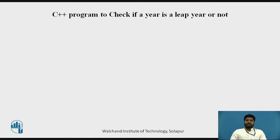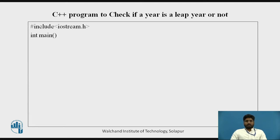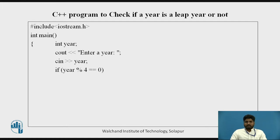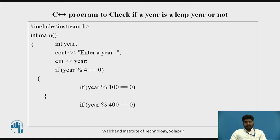The second program is a C++ program to check if a year is a leap year or not. We take one integer variable 'year' and store the user's input in it. The logic uses a nested if-else: if year % 4 equals 0, and further if the year is also divisible by 100 as well as 400, then it is a leap year.